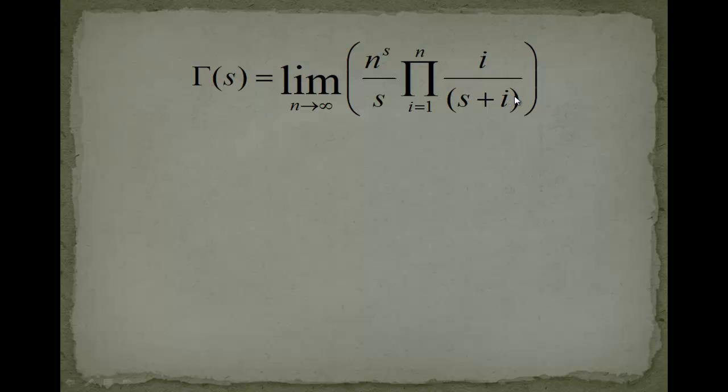We just change their positions and write this as 1 over 1 plus s over i. We rewrite it with a minus 1 like the Weierstrass product. And then you see the similarity 1 over s in this strange-looking product.